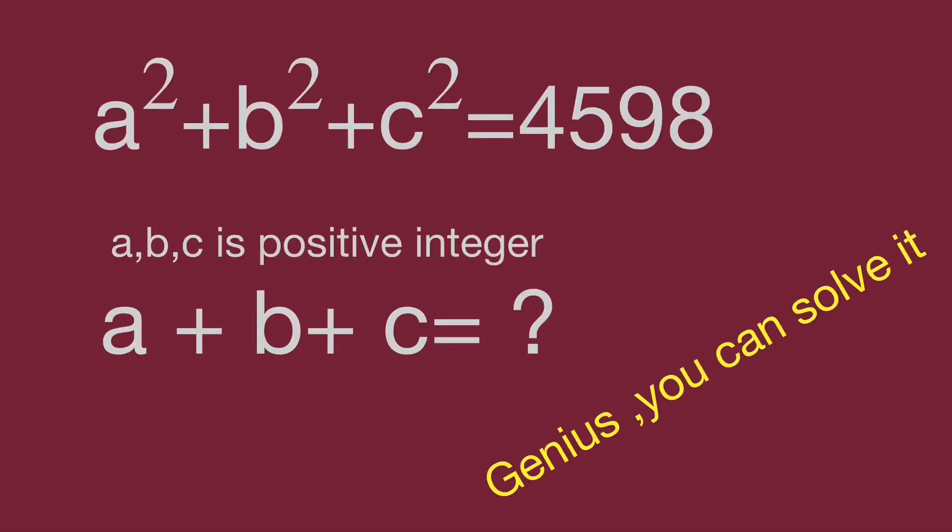Hello, in this question we have equation a² + b² + c² = 4598 and a, b, c is positive integer.